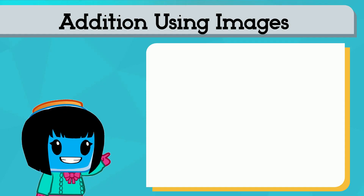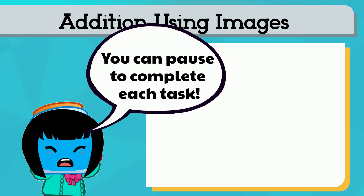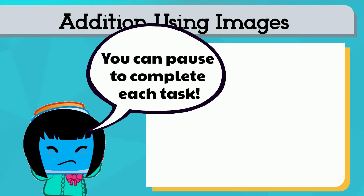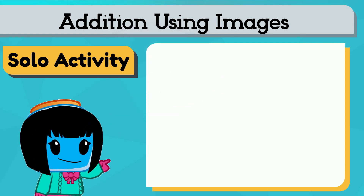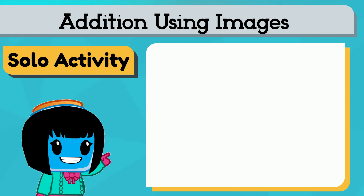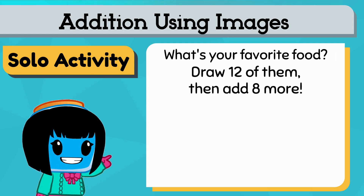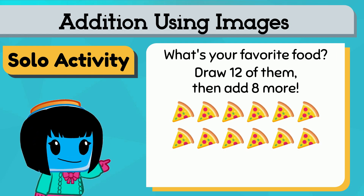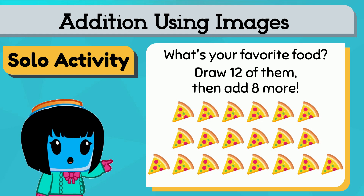Let's try adding other numbers by using their images. Push pause while you complete each task. You can do this on your own. What's your favorite food? Draw twelve of your favorite, then add eight more.